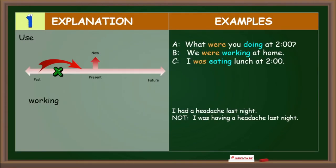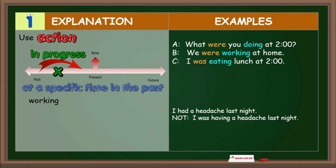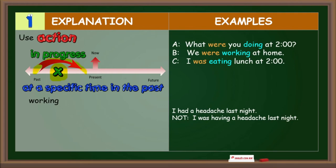Let's continue with explanations. Number one: Use the past progressive to describe an action that was in progress at a specific time in the past. The action began before the specific time and may or may not continue after the specific time.